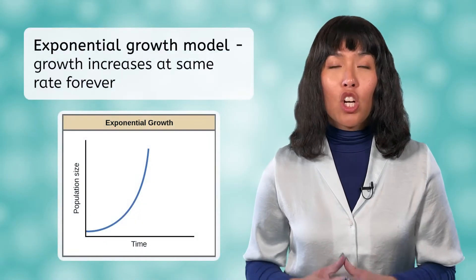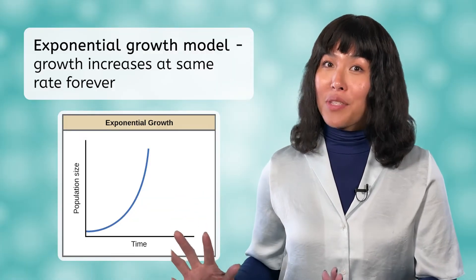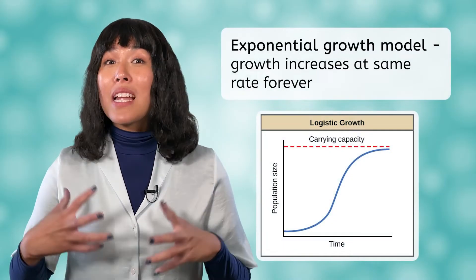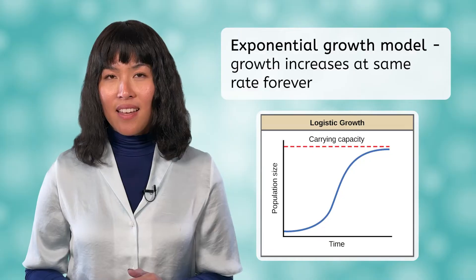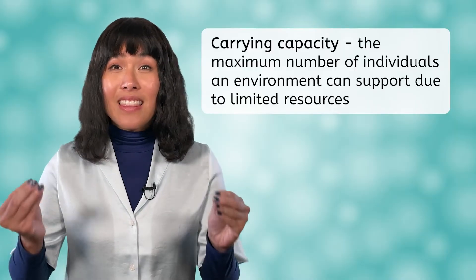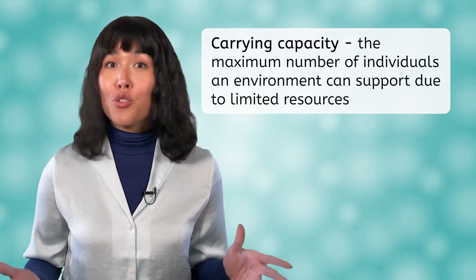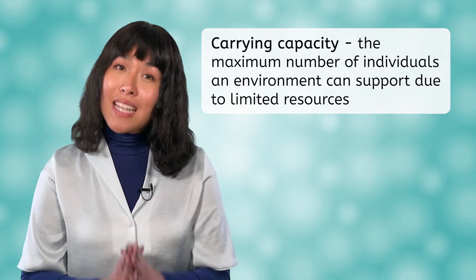The exponential growth model occurs when the growth increases at the same rate forever, without any limiting factors in place. The growth of the human population follows an exponential growth model. Logistic growth models are more common. In these models, a population grows exponentially but then slows or stops altogether when it hits its carrying capacity. The carrying capacity of a population is the maximum number of individuals that the environment can support long-term, due to limited amounts of energy, water, nutrients, etc. Carrying capacity is the reason most populations are able to stabilize over time.